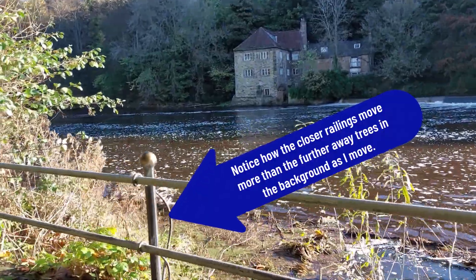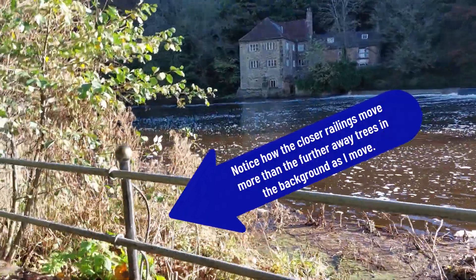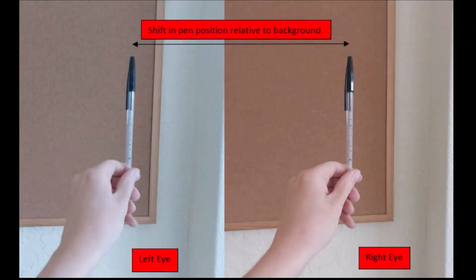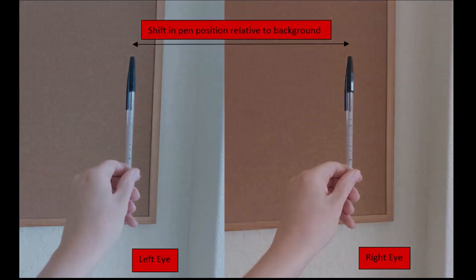It's the apparent shifting of objects with respect to a further away background when viewed from two different locations. The simplest example of this is when you stick your thumb out in front of you and look at it from your left eye and then just from your right eye. Your thumb shifts left and right with respect to the background. This is exactly parallax.